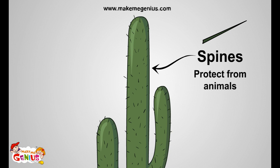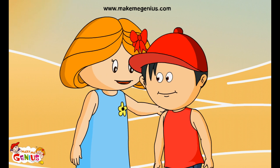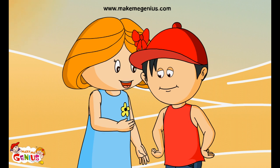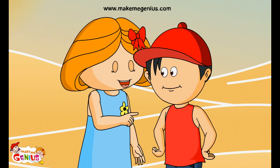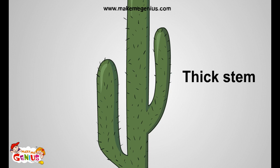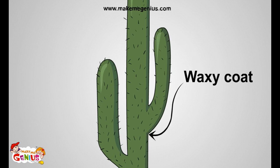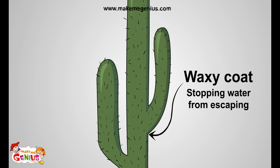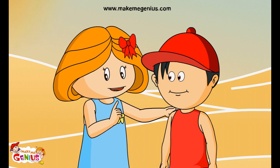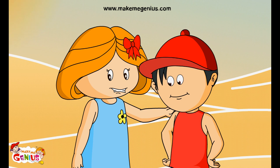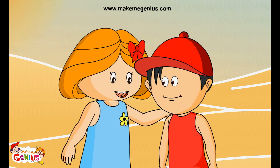I see. And due to spines, no animals can eat the cactus. You are right — this adaptation in cactus helps it to save itself from being eaten by animals. Cactus's stem is also very thick. How does that help? The thick stem is useful for storing water. And look carefully — cactus has a waxy coating. I know — waxy coating stops water from escaping. You are right. Plants in hot and sunny areas like deserts have a waxy coating to reduce water loss.